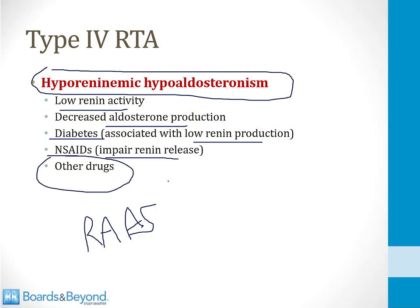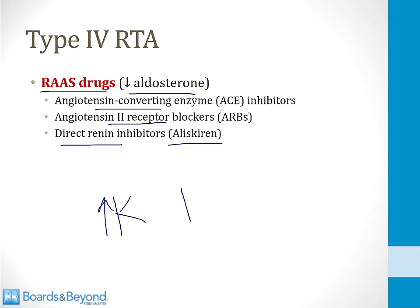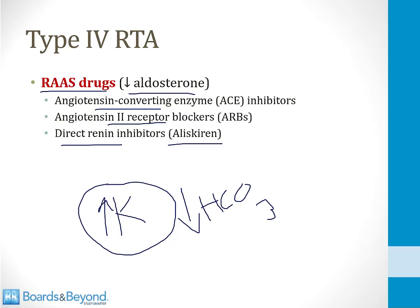There are a number of other drugs associated with type 4 RTA, meaning that they lead to hyperkalemia and low serum bicarb. Patients taking drugs that interfere with the RAS can also develop low aldosterone levels and a type 4 RTA. ACE inhibitors, ARBs, and direct renin inhibitors like aliskiren — all of these drugs are associated with hyperkalemia, and they can also cause a reduced serum bicarb level and a low urinary pH. This all has to do with the features that fall out from the high potassium level associated with low aldosterone, which leads to the acid-base disturbance of a type 4 RTA.